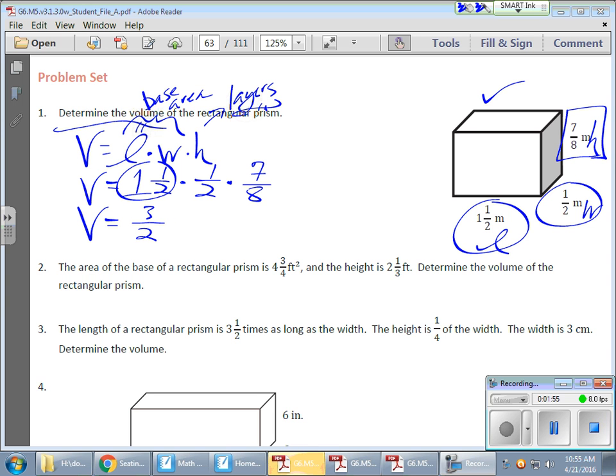1/2 is looking good already. My 7/8 is looking good already. Before I multiply, I'm going to see if there's anything I can simplify. I don't see anything I can simplify, so I'm going to just continue to multiply. So my 3 times 1 times 7 gives me 21 over 2 times 2, which gives me 4. And then 4 times 8 gives me 32.